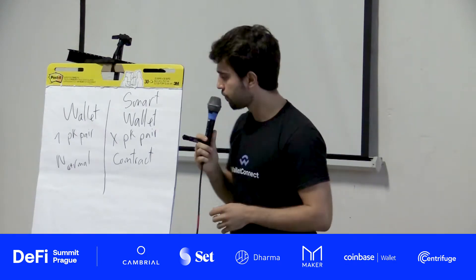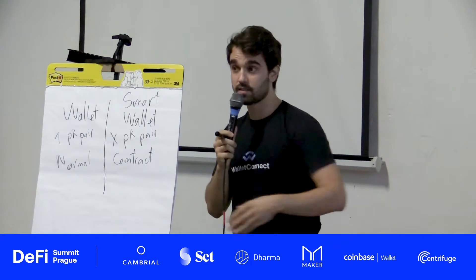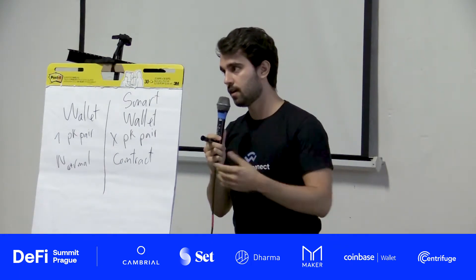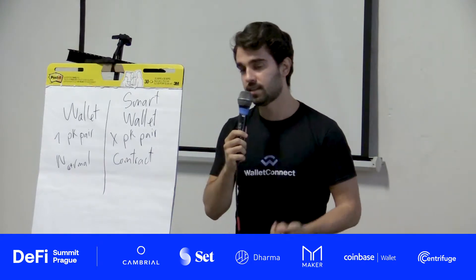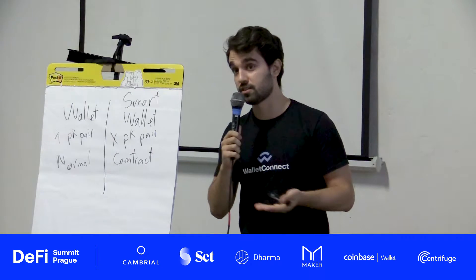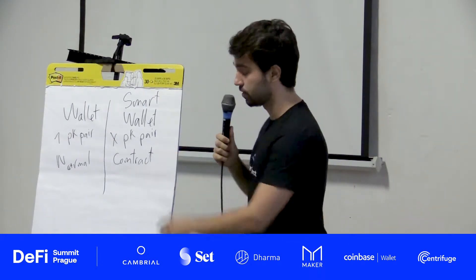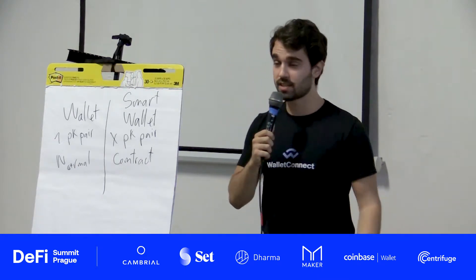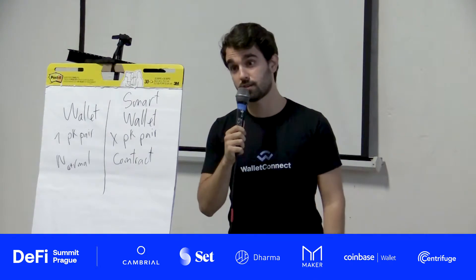From a dApp perspective, you're still seeing this smart contract, because on the blockchain you don't see a smart contract differently from a normal account — they're both just addresses holding some assets. From a user's standpoint, they still have a public address; it just happens to be a smart contract instead of the actual key living on their device.